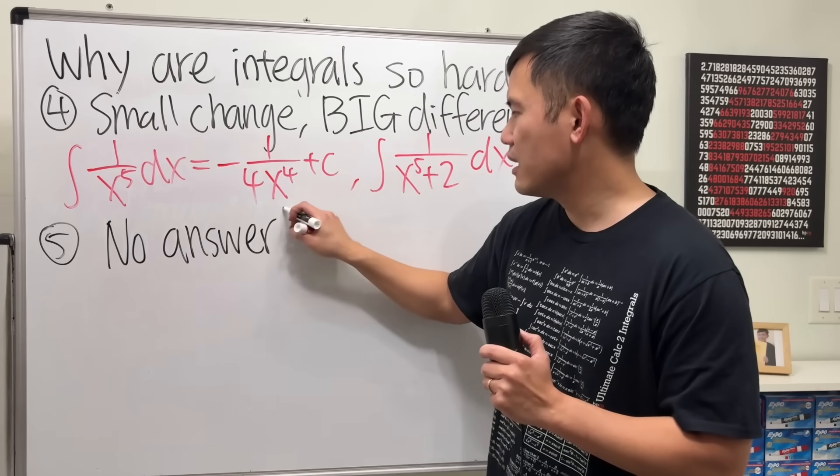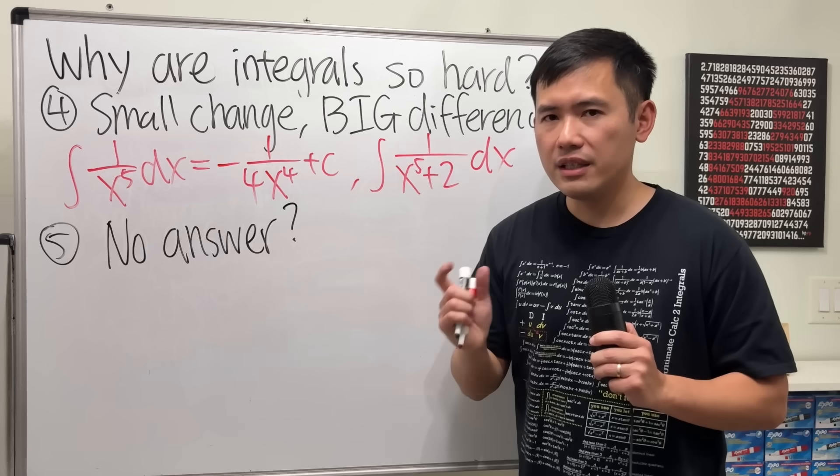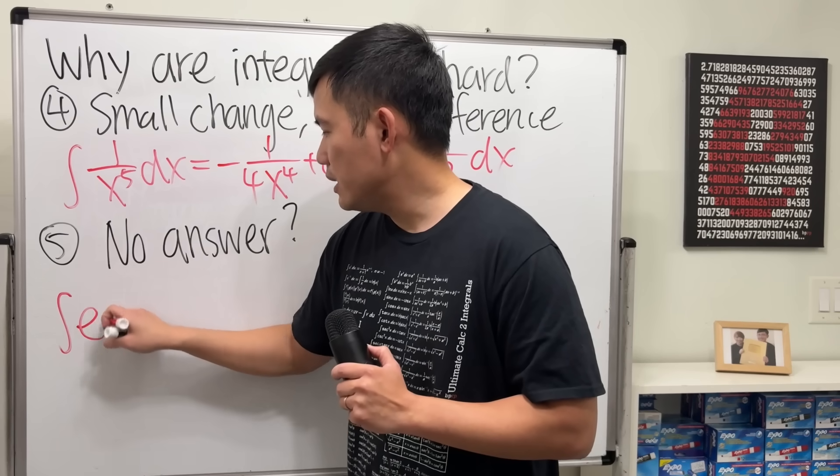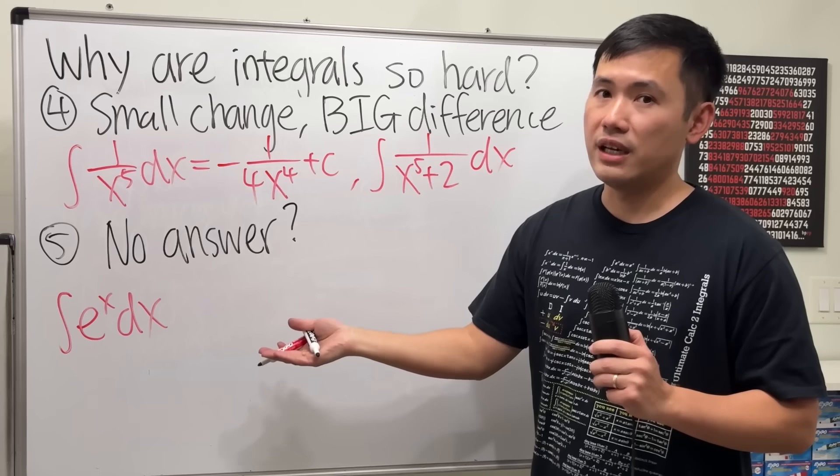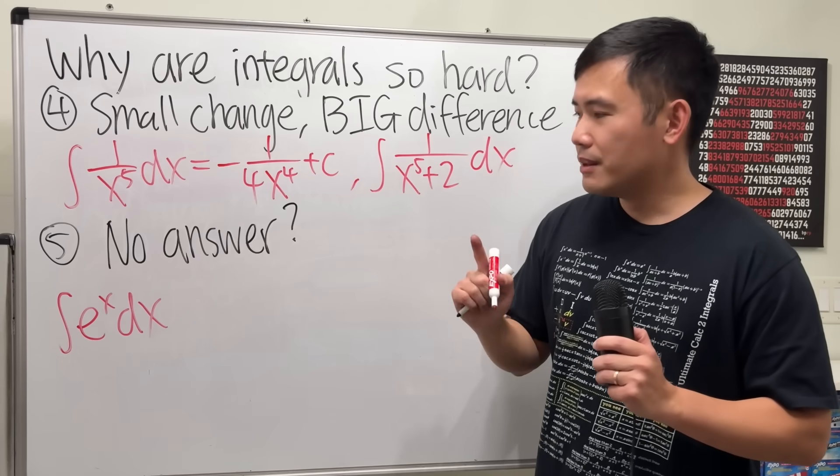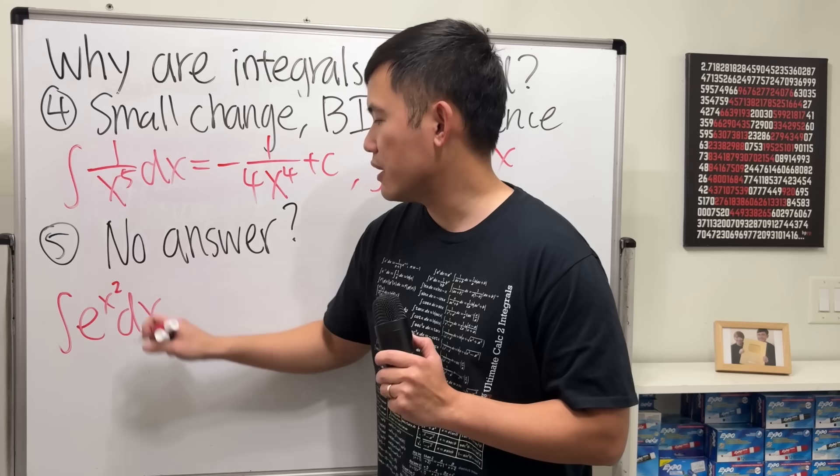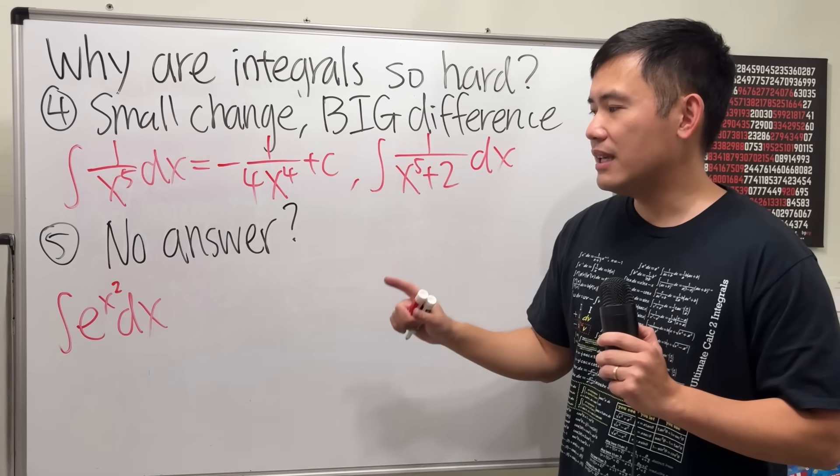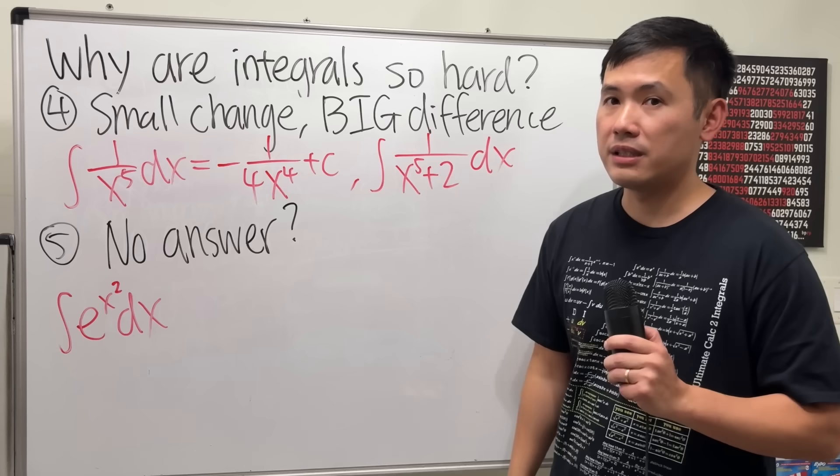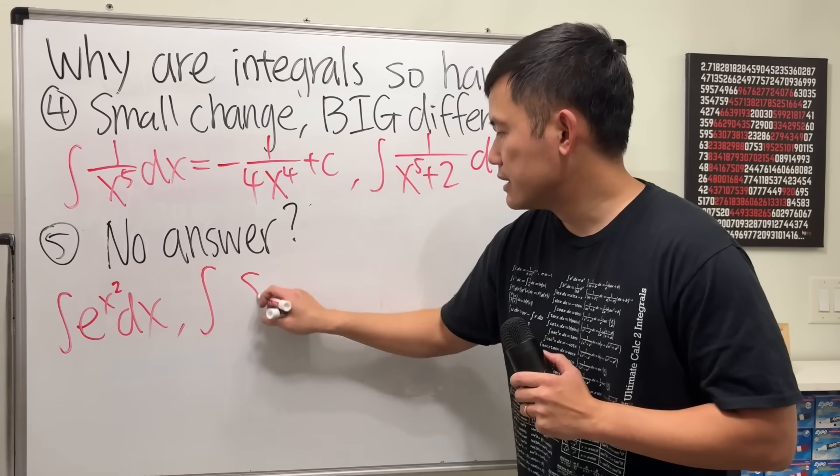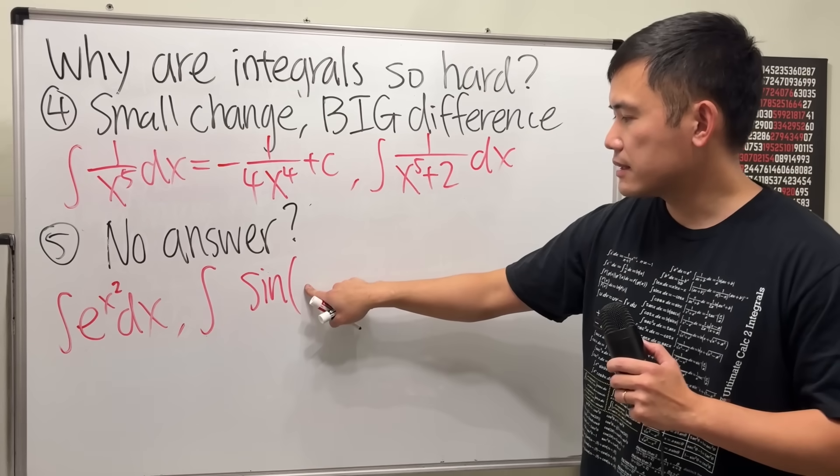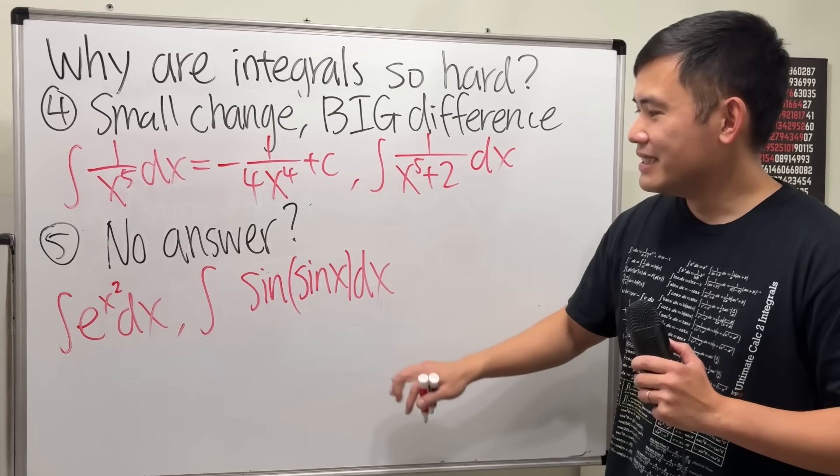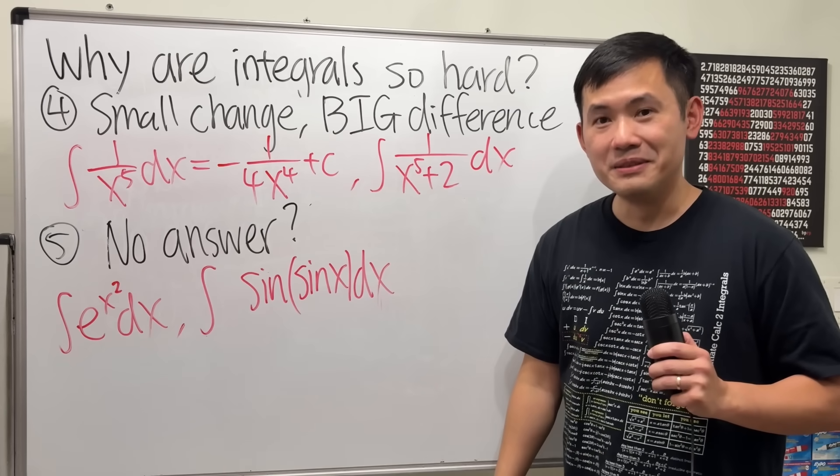Yes, it's possible to have an integral without any answers. For example, if you look at the integral of e to the x, that's super easy. It's just e to the x plus c. But if I change this to e to the x squared, this integral has no answer. In fact, it has no elementary answer, but I'm going to explain that later. Here's another example. Sin of x. Well, that would be easy. But if I put sin of sin of x, then this integral has no answer. It's true.